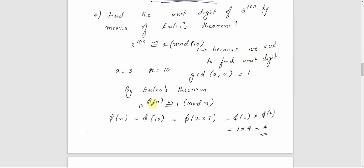By Euler's theorem, A raised to φ(N) is congruent to 1 mod N. So we compute φ(N), that is φ(10). Since 10 equals 2 times 5, where 2 and 5 are prime, φ(10) equals (2−1)(5−1) equals 1 times 4 equals 4.